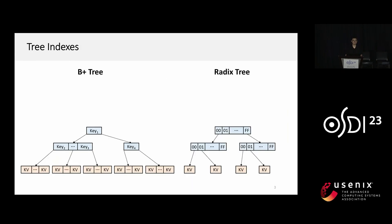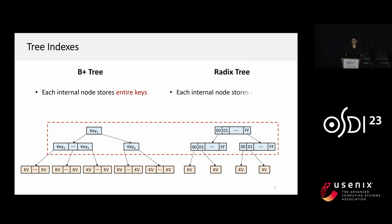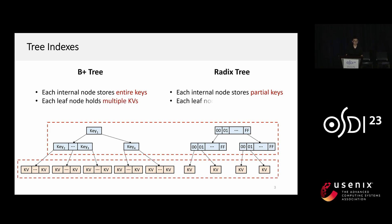Chain indexes are a fundamental building block of many applications. Among them, the two most commonly used chain indexes are the B+ tree and the radix tree. For each internal node, the B+ tree needs to store entire keys, while the radix tree stores partial keys. For each leaf node, the B+ tree stores multiple key-value items together, while the radix tree only stores one single key-value item.